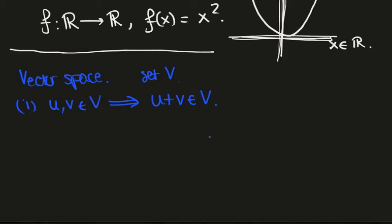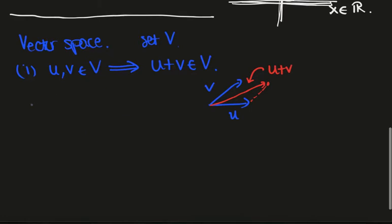You can think about this in terms of arrows. If I take an arrow u and another arrow v and I add them together, which is done by doing this tip to tail, this is the arrow and this is also an arrow. If I add two arrows, I get an arrow. So if I add two vectors, I get another vector.